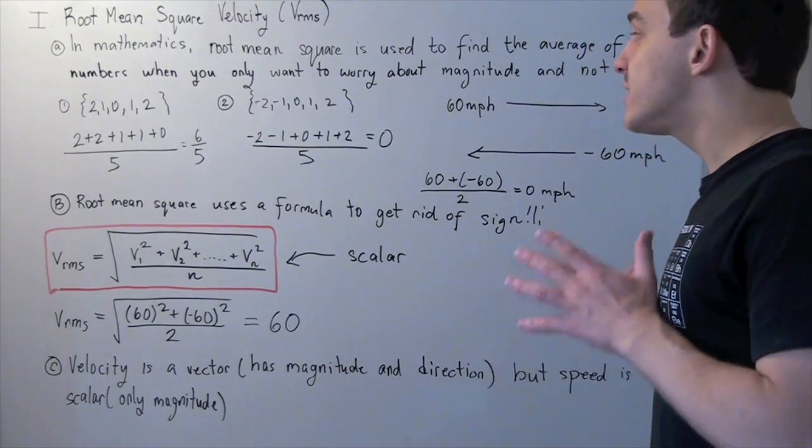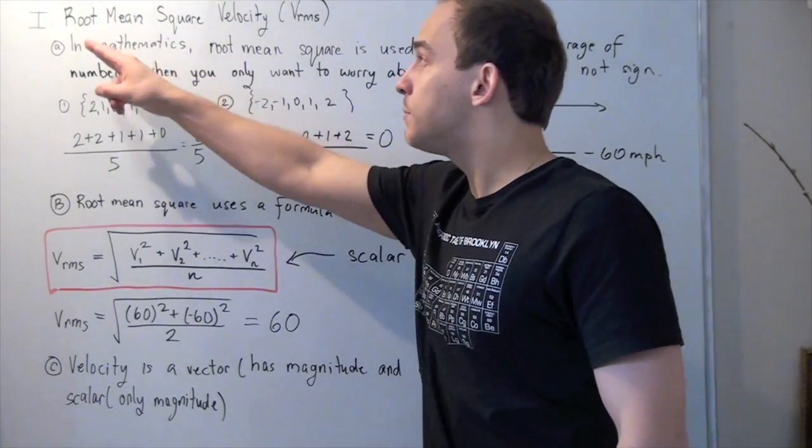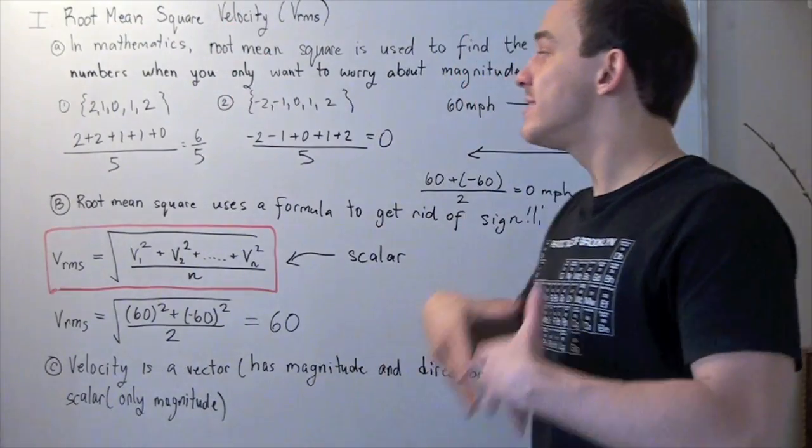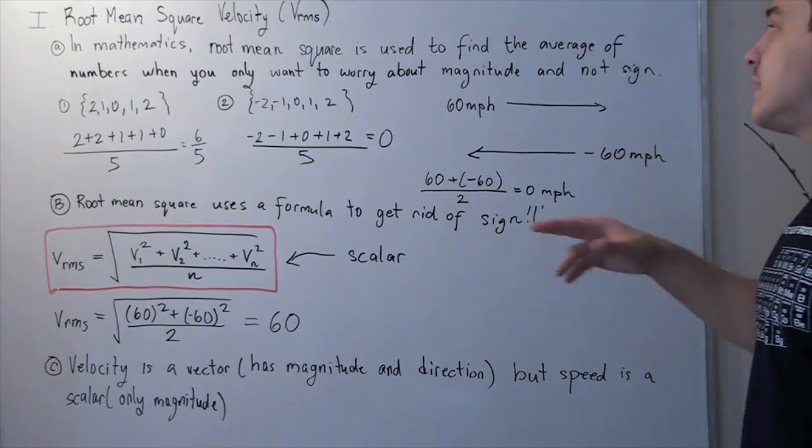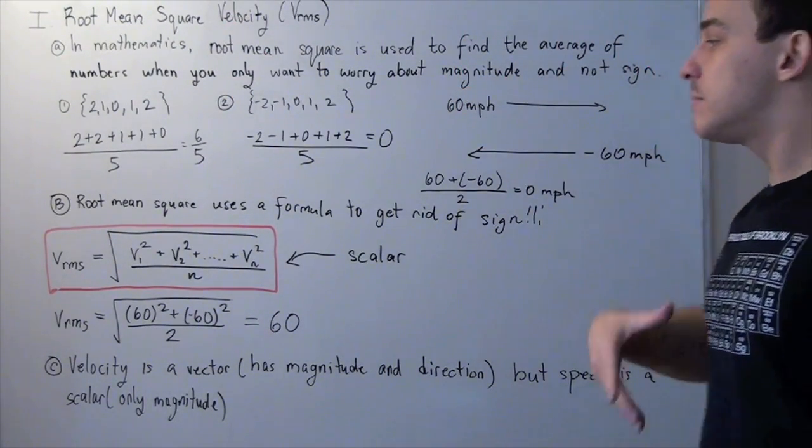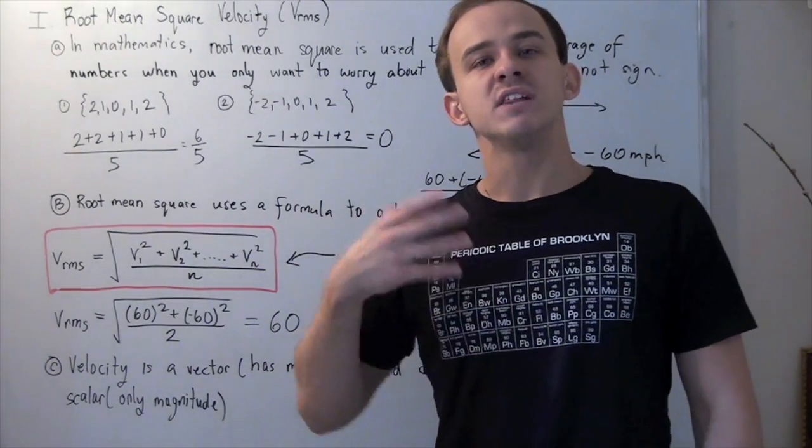So you see once again, that the purpose of the root mean square is to take away those negative signs, and just give you the magnitude. And this becomes useful when you're talking about velocities.